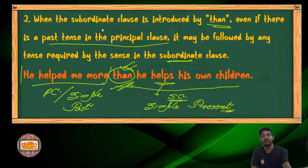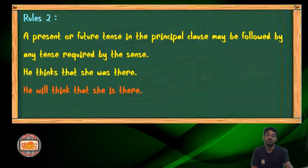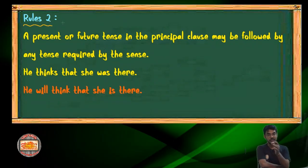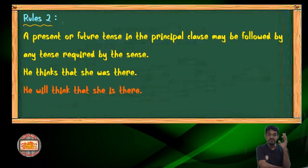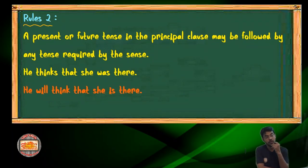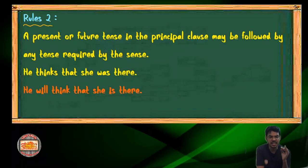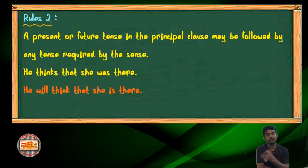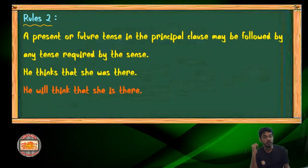This is exception number two. Now we shift to Rules 2: A present or future tense in the principal clause may be followed by any tense required by the sense. If the principal clause is in present or future form, the subordinate clause may be produced with any tense you require to use. According to the tense you want to produce, you may use that tense — there's no burden if the principal clause is in simple present or future.